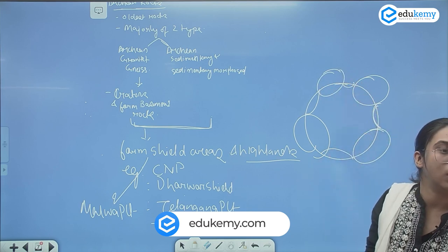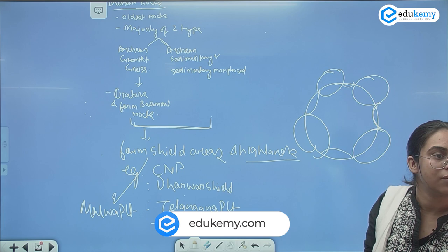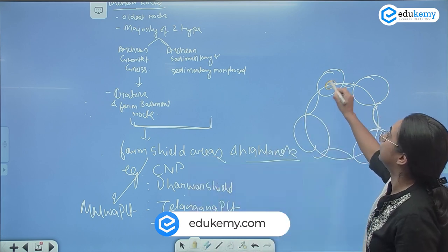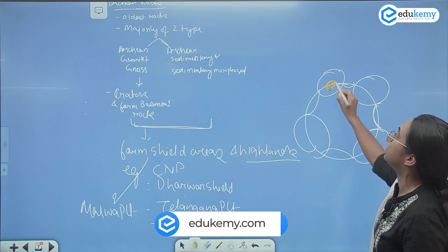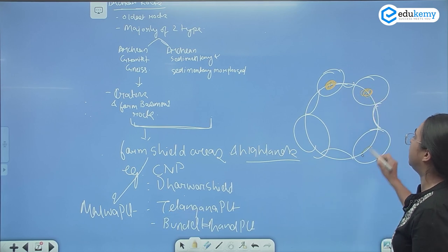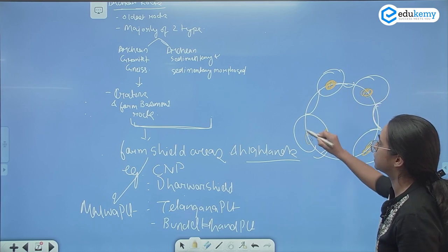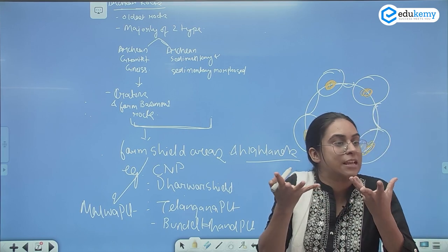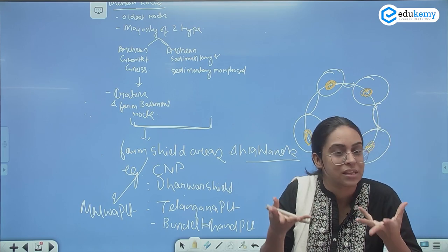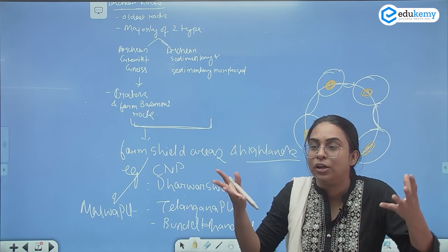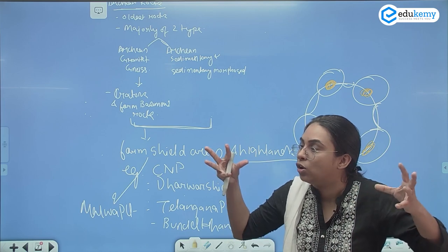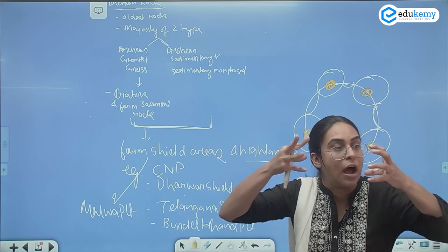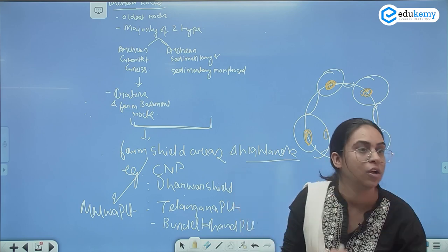What gives stability to these continents is the basement rocks. There are certain basement rocks which give stability to the continents. What are these basement rocks? They are nothing but cratons — the cratons, or the basement rock which gives stability. They are hard rocks and this stabilizes your continent.